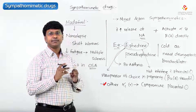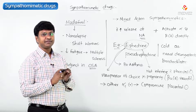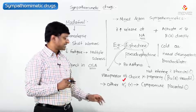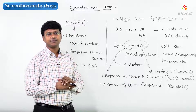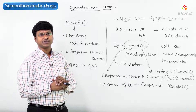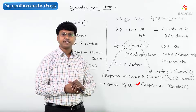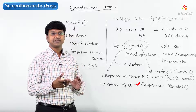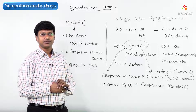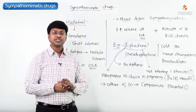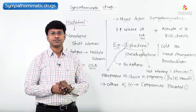Other drugs like methoxamine, mephentermine, and other selective alpha-1 agonists can cause placental vasoconstriction and will compromise the fetal or placental circulation. That is why these drugs are not used. This completes the discussion on sympathomimetic drugs.